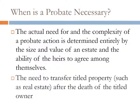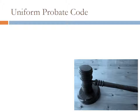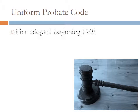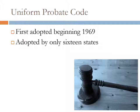Probate is also definitely necessary when there is a need to transfer titled property after the death of the titled owner. Many people today try to avoid this by putting their property into a trust, though this may or may not avoid disputes among heirs. One modern effort to update probate is called the Uniform Probate Code, first adopted in 1969, but today completely implemented by only 16 states.